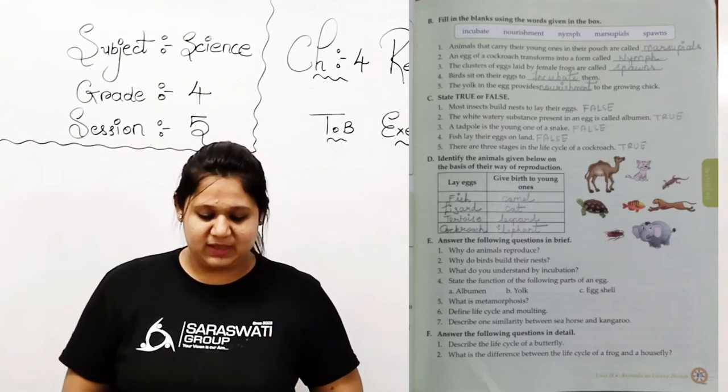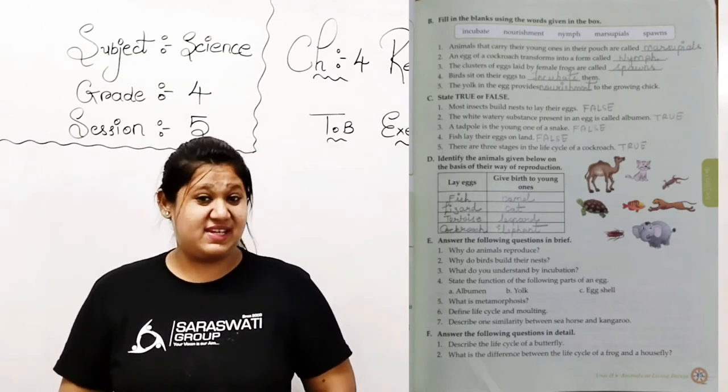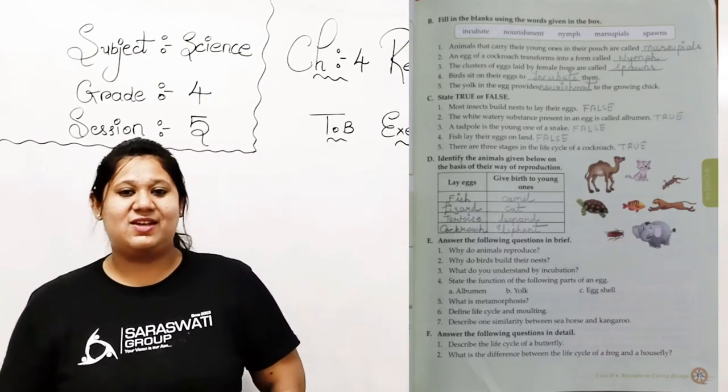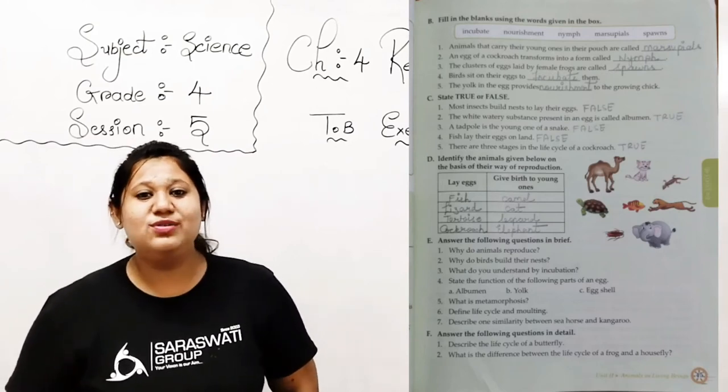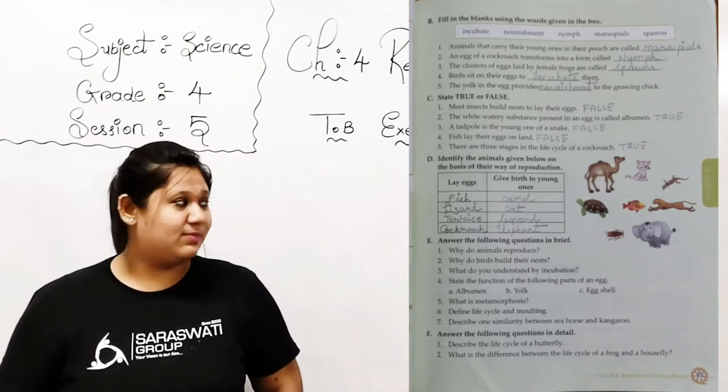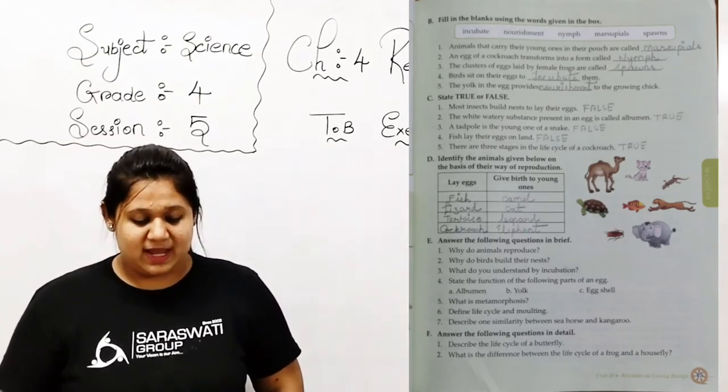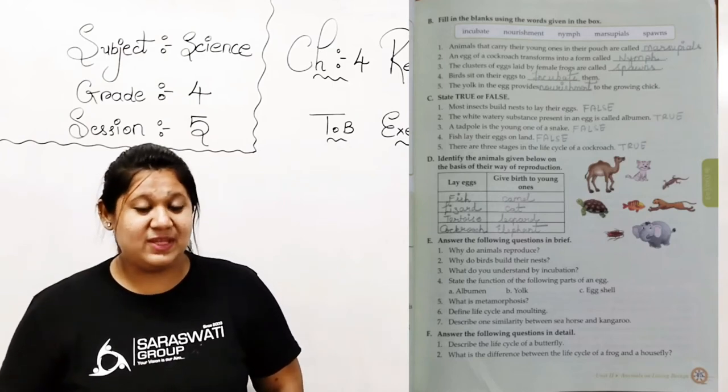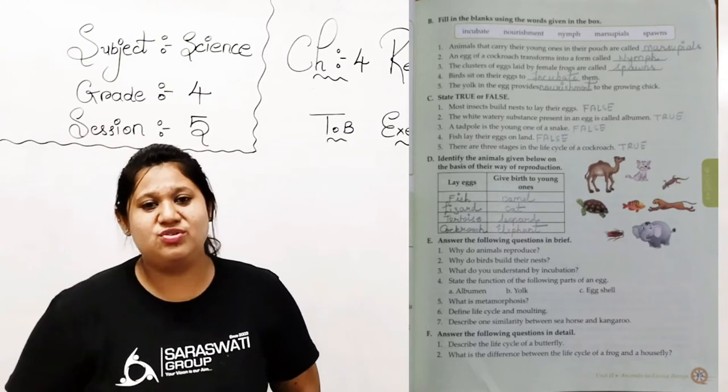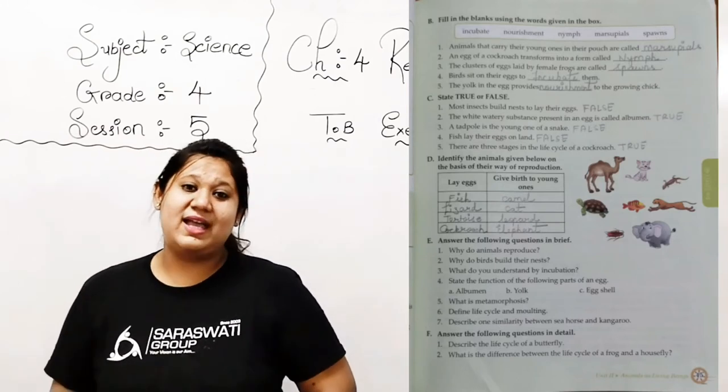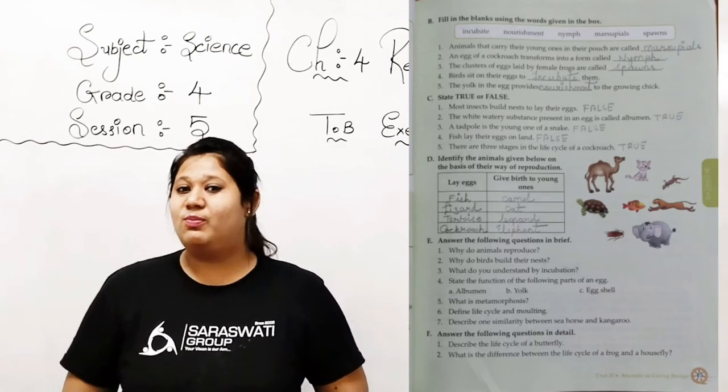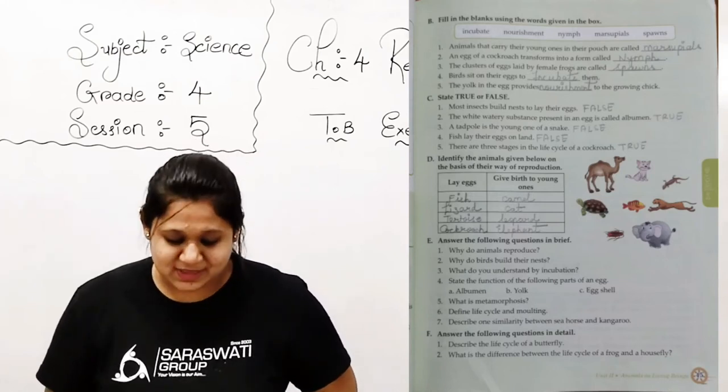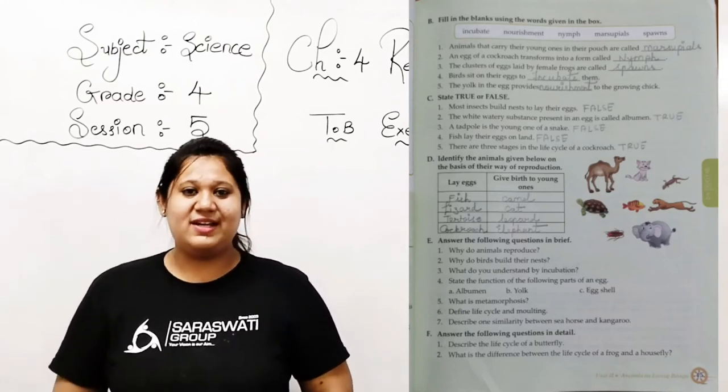Now next, number 2: the white watery substance present in an egg is called albumen. We just explained it recently, right? So this statement is correct. The white part that is present in an egg is called albumen. So write down true. Now number 3: a tadpole is the young one of a snake. You know, tadpole is the young one of a frog. So this statement is incorrect and you are supposed to write down false. Clear?